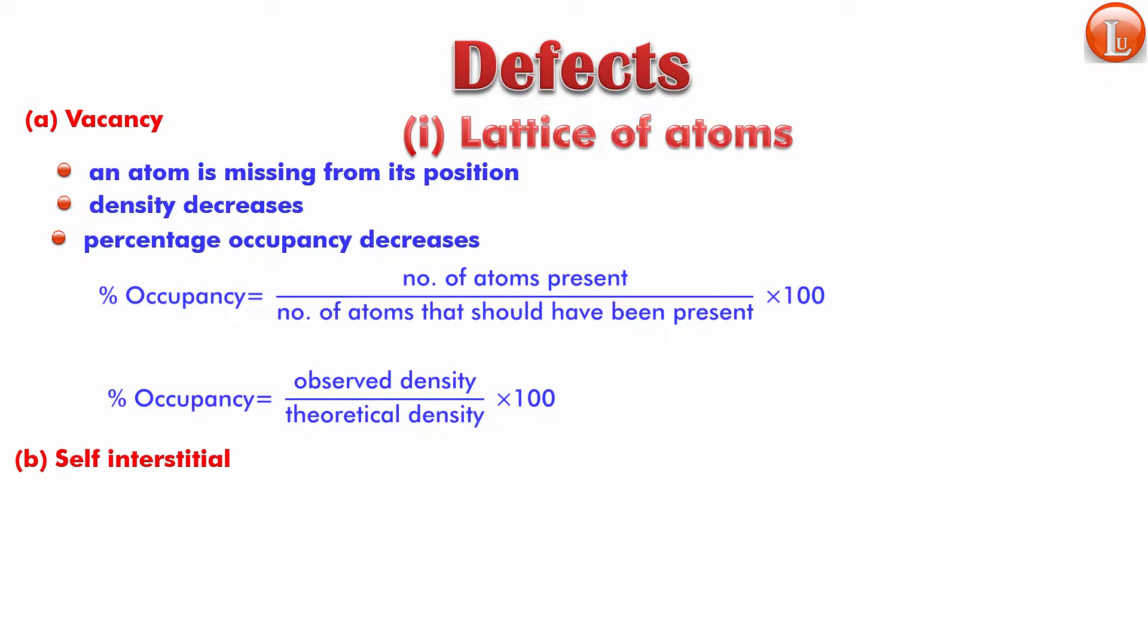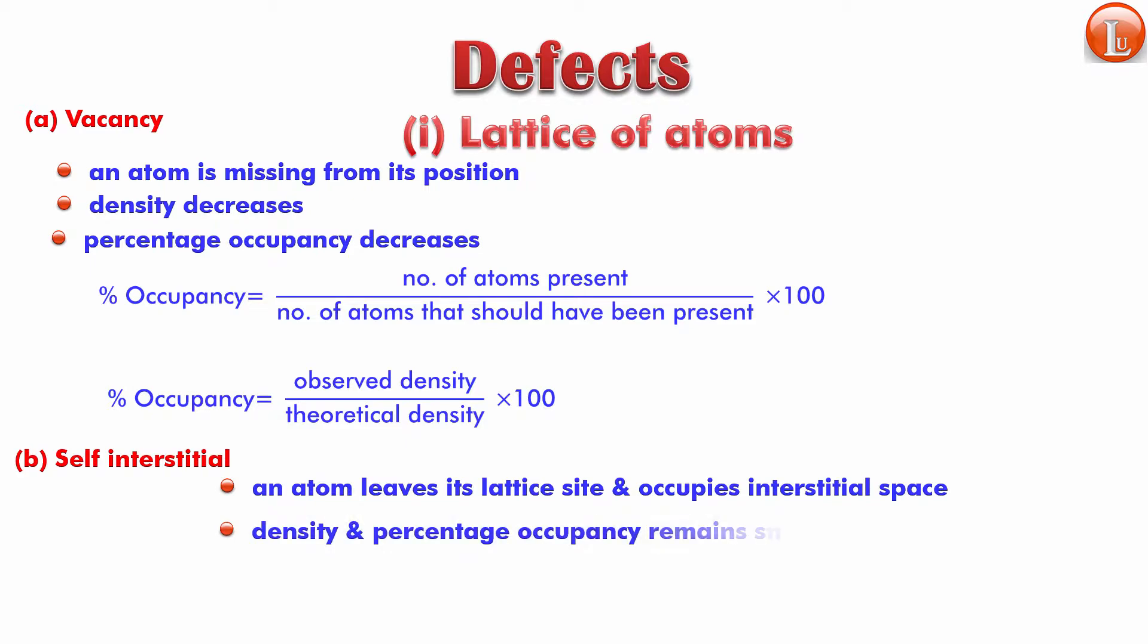So it is also possible that two atoms may do this: one may come in a little bit more, one may go out an equal amount more, and therefore what would happen is that the percentage occupancy remains the same. So an atom or atoms leave its lattice position and occupy an interstitial space. Density and the percentage occupancy do not change.